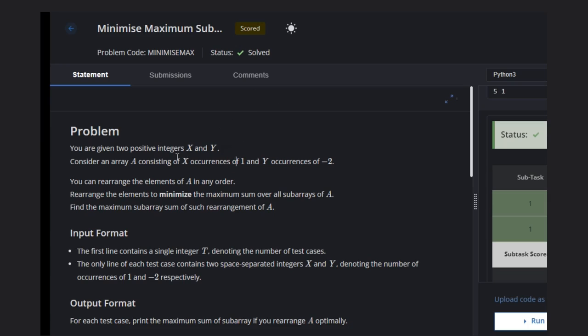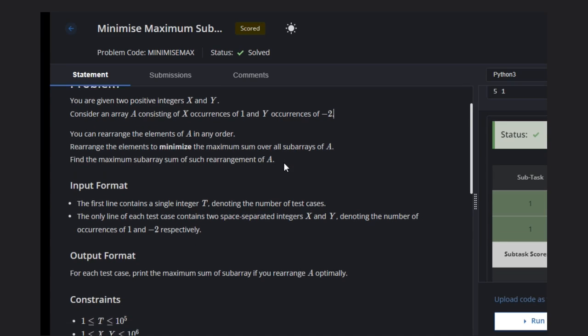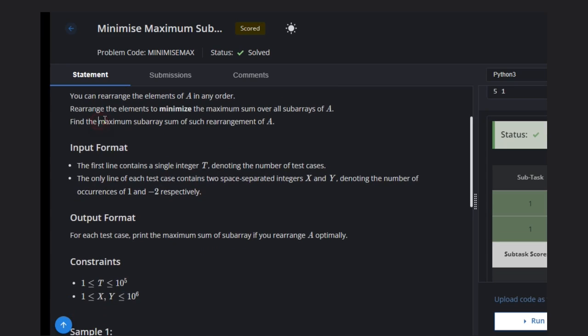So this is the problem. We are given two integers x and y. We need to consider array A that is consisting of x occurrences of 1 and y occurrences of -2. We can rearrange the elements of A in any order. Rearrange the elements to minimize the maximum sum over all subarrays of A. Find the maximum subarray sum of such rearrangement. This is what we need to find.